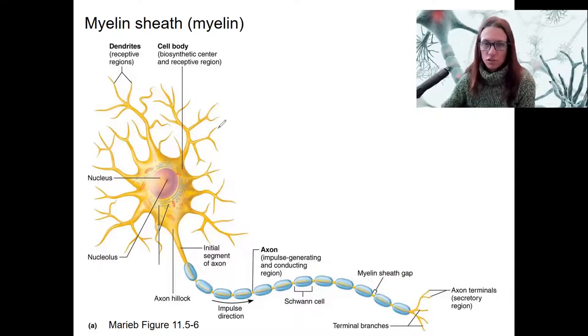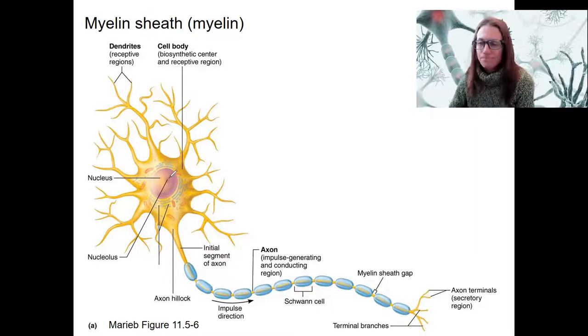So here is another picture of a neuron with all the components I drew before. Nucleolus is a different one, right, inside the nucleus.